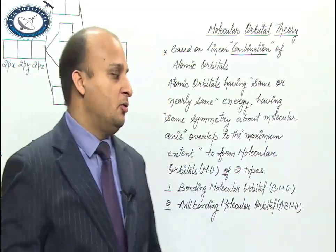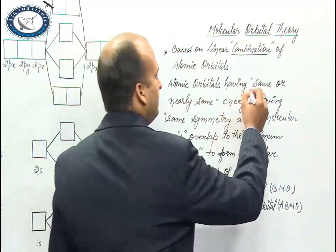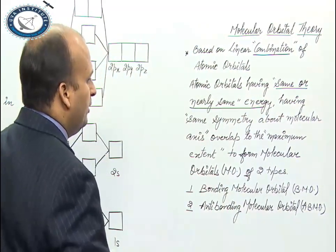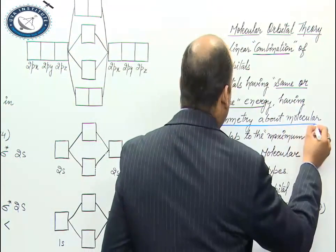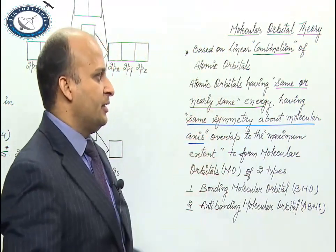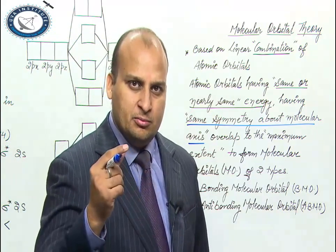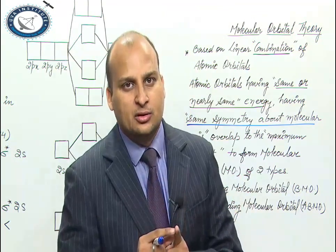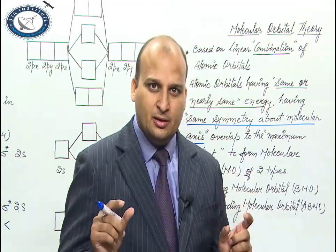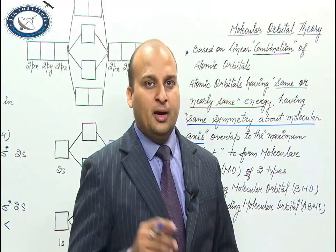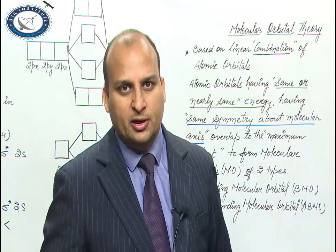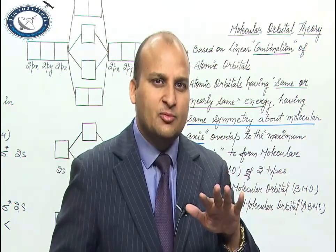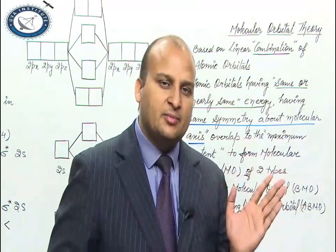Which atomic orbitals will combine? Those which have the same or nearly same energy. Same symmetry about the molecular axis. Why do we say 'nearly same'? For example, in carbon monoxide (CO), the energy of carbon's and oxygen's orbitals is nearly the same — so same and nearly same both apply.